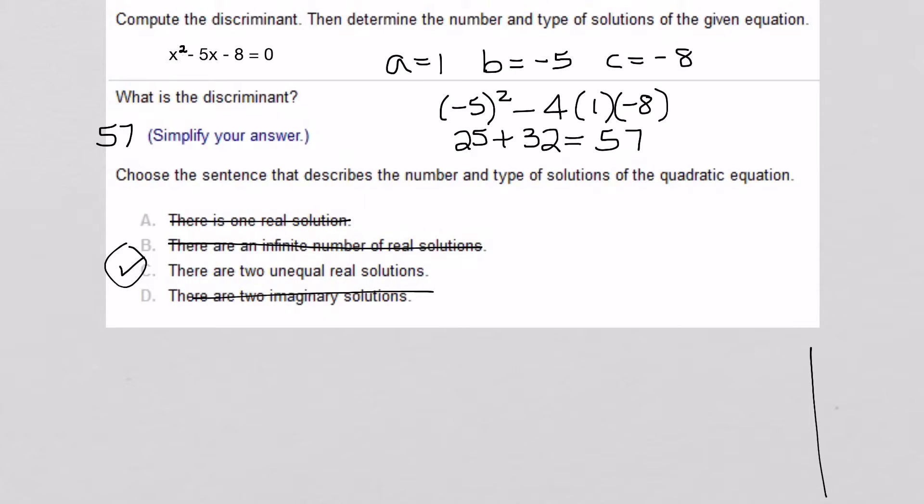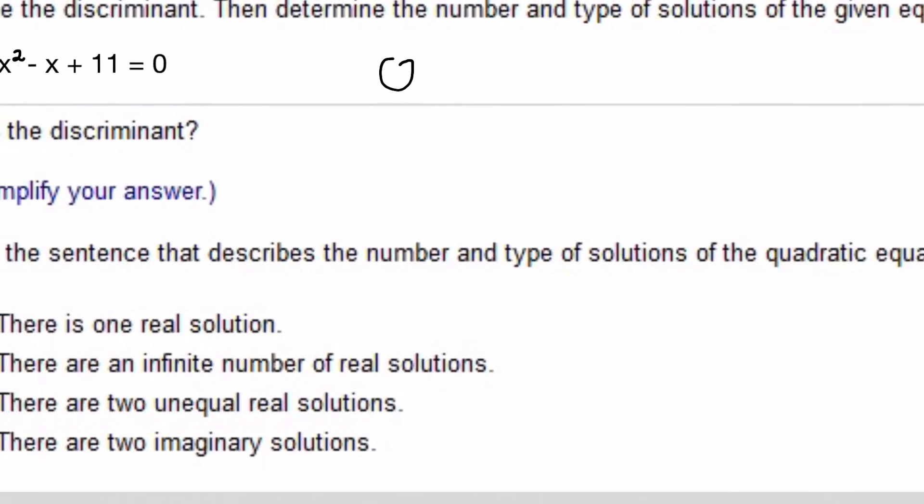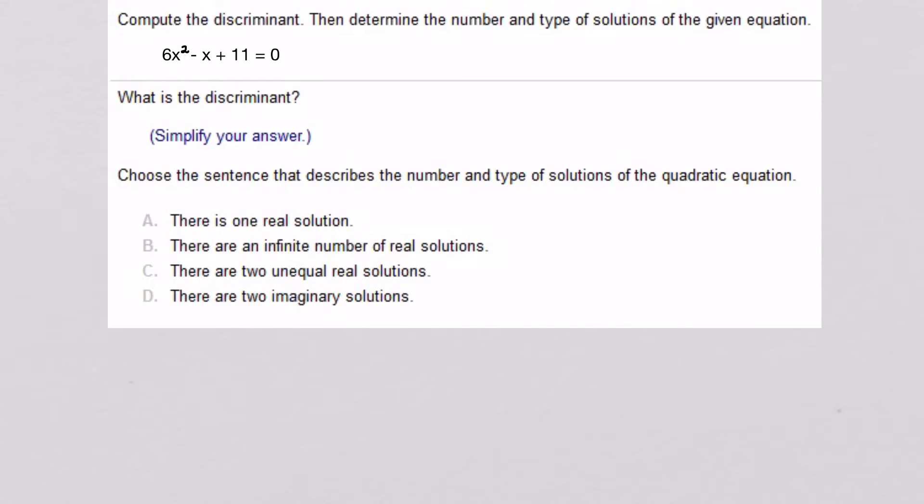Let's find our next. Okay, here we go. So, here's our next equation. So, in this one, I have A equals 6, B equals negative 1, and C equals 11.